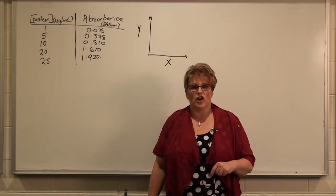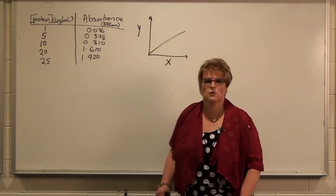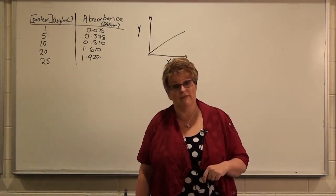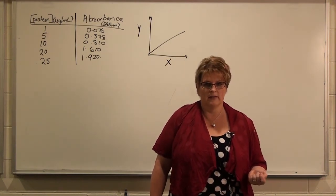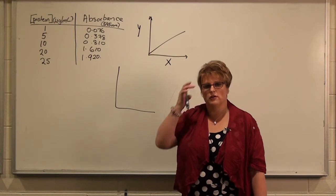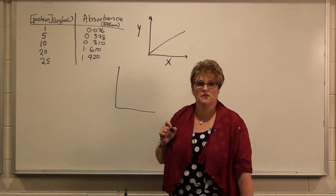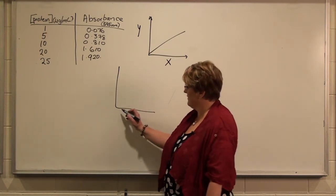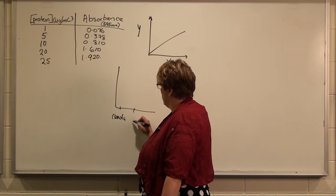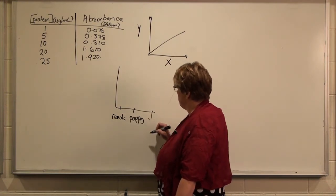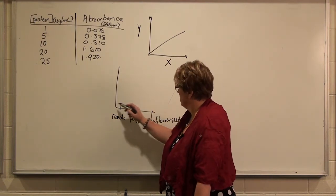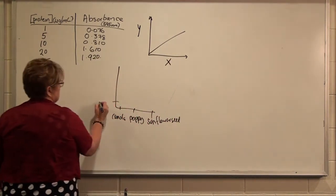You often see data presented in column graphs or line graphs. As a scientist, there are situations where you use each type. An example of where you would use a column graph is if you are surveying the sizes of seeds in a range of different plants — you might have a canola seed, a poppy seed, and a sunflower seed. A poppy seed is quite small, about one millimetre.